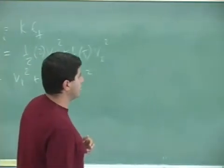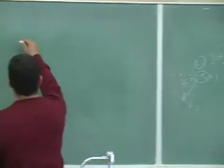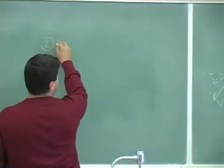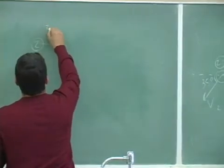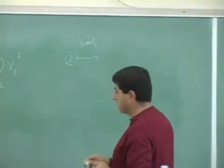A little toned down, a little bit easier. What we could do is make the original problem like this. Remember the original problem was two kilogram coming with three meters per second, and remember the other one was coming up this way. Well,